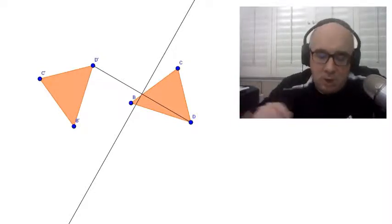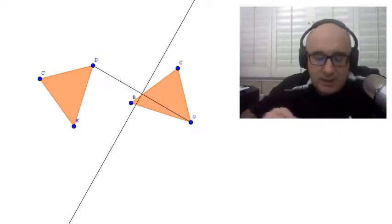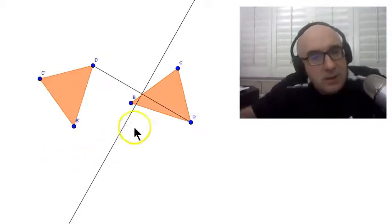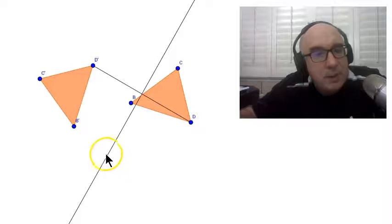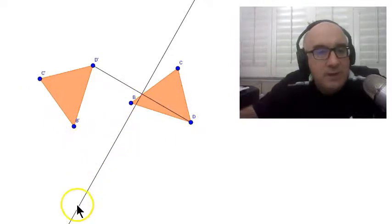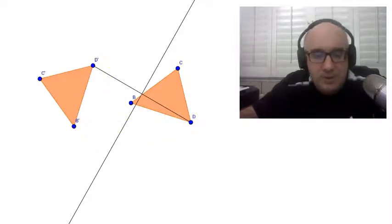But along that line, somewhere along here is a point that would not only be equidistant to B and B', it's going to be equidistant to C and C' and D and D'. But we don't know where along here. We know all of these points are equidistant to B and B', but we don't know about the others.